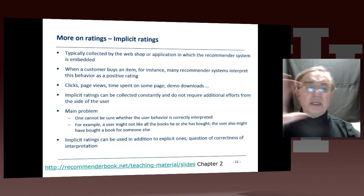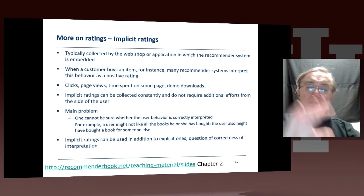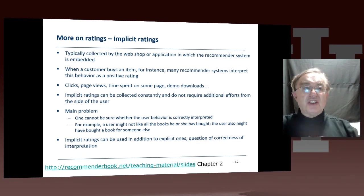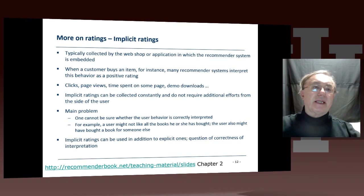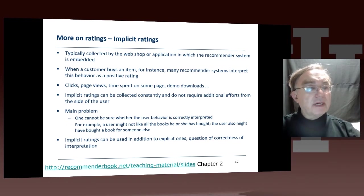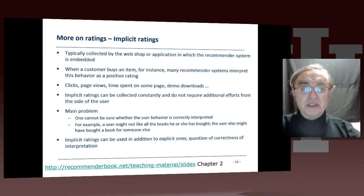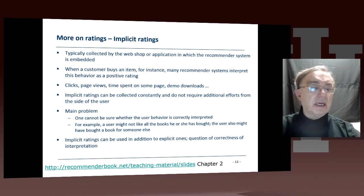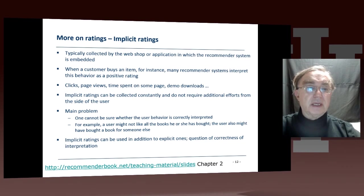Obviously, all of this in a real system is put together in some giant package. As I said, Netflix has 100 items in this giant machine learning system — at least the one that won the competition did. I assume Netflix has even more these days.